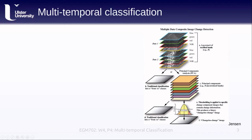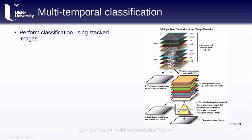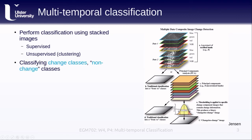One alternative to post-classification comparison is multi-temporal classification. This is where we take our image acquired at time 1 and our image acquired at time 2, combine them into a single stacked image, and then perform our classification using that stacked image. We could do a supervised classification, as covered in EGM 713, or an unsupervised classification or clustering.